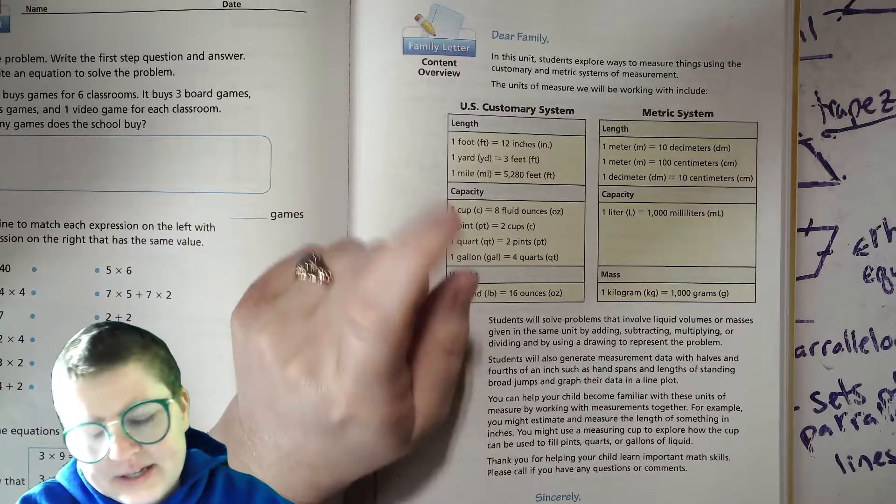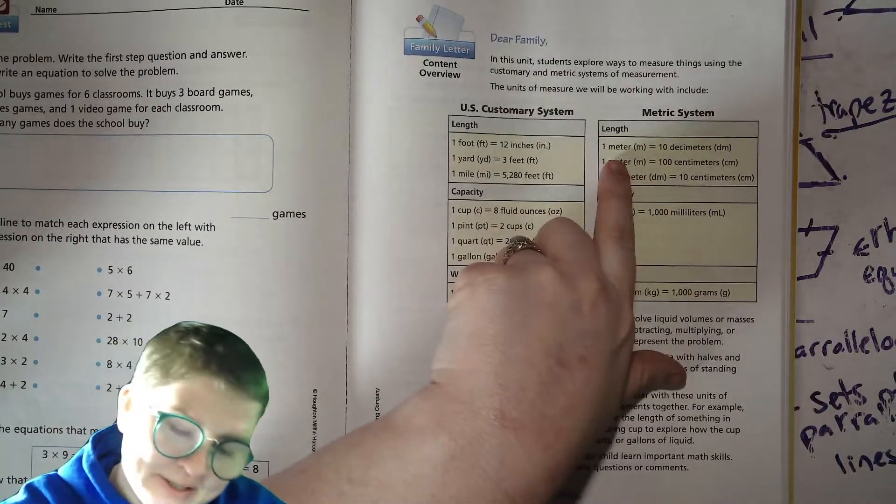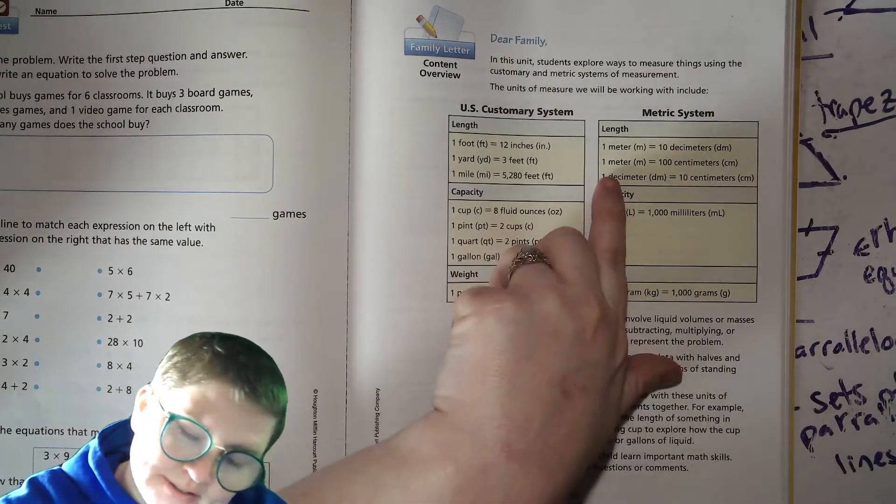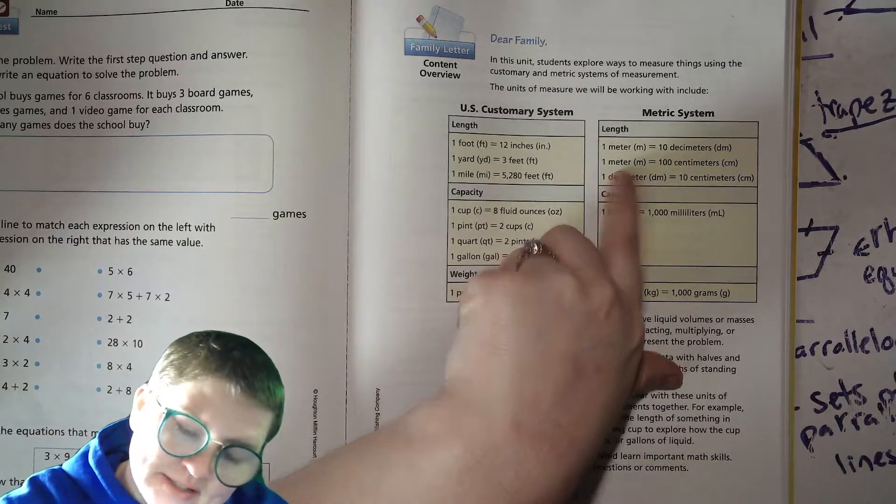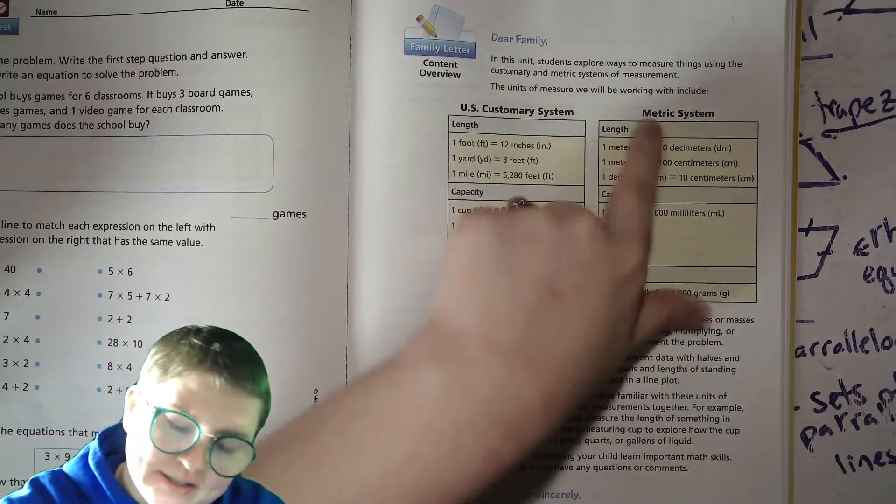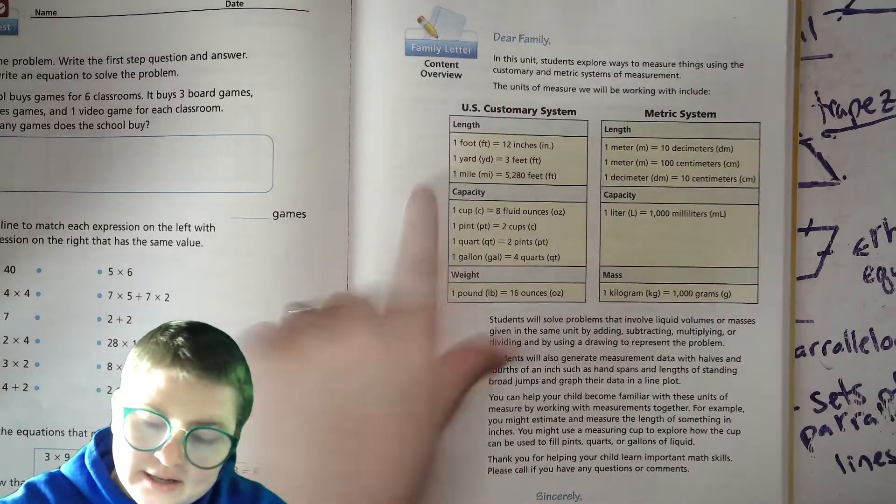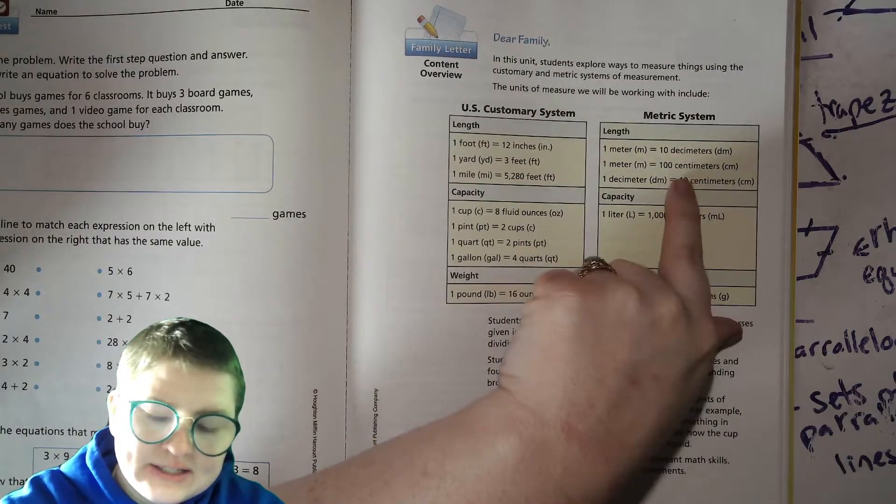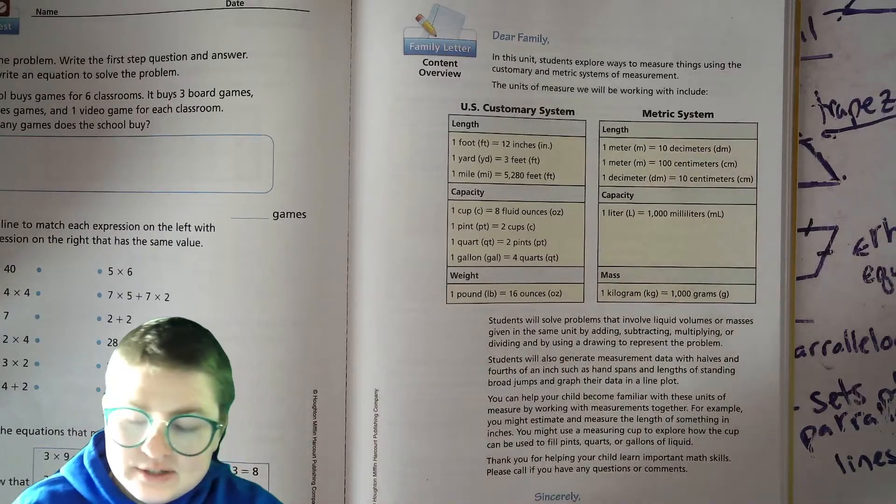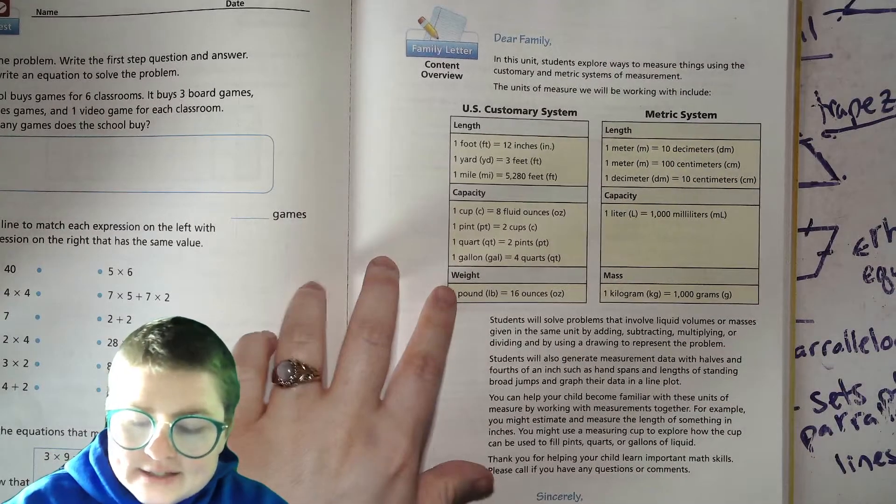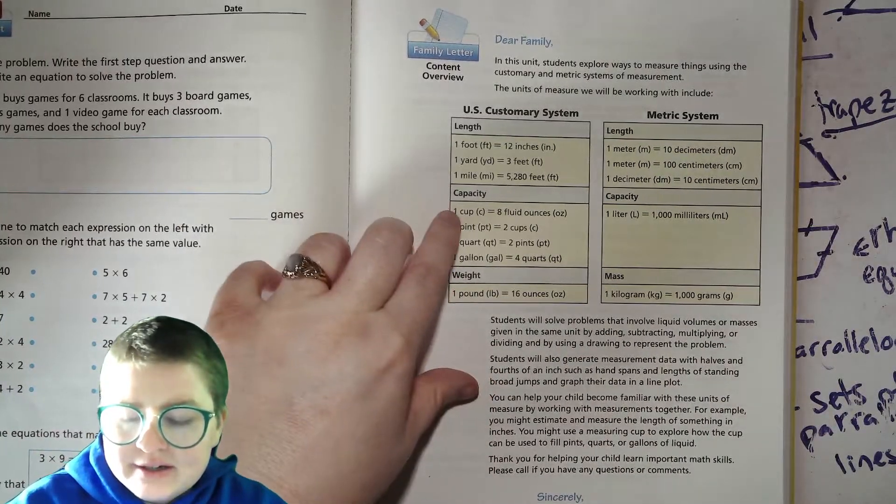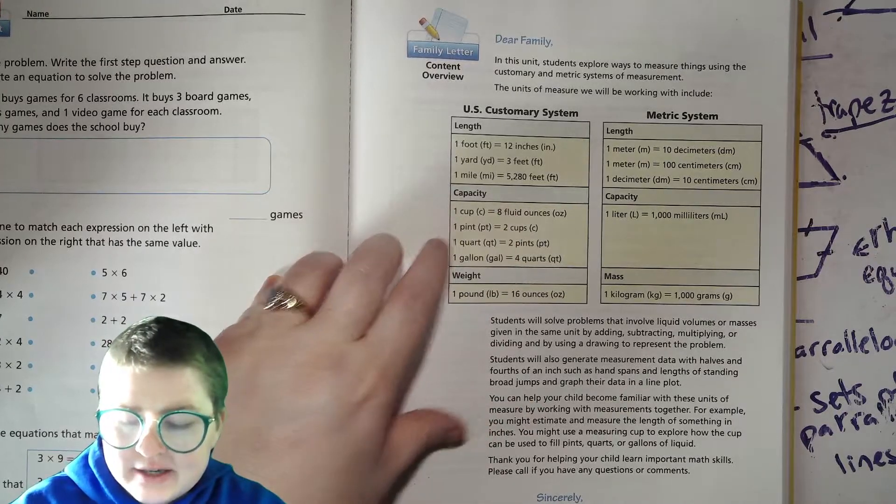In the metric system there's meters, decimeters, centimeters, and they're all based on 10 and 100. It connects to centi is 100 and deci is 10, so it's pretty easy to follow.